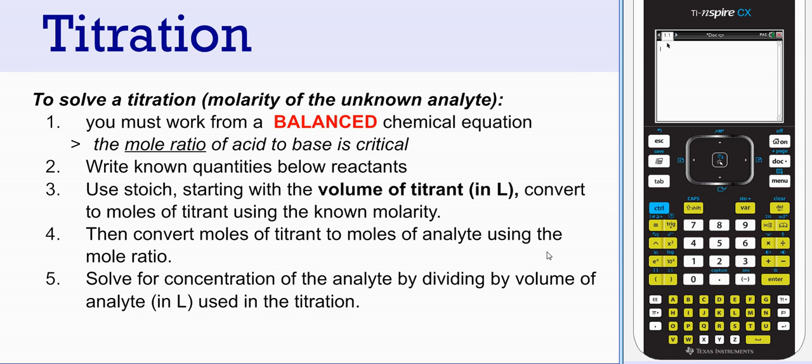Using stoichiometry, we're going to start with the volume of the titrant in liters. And then we're going to convert to moles of the titrant and then to moles of the analyte. And then from there, we can use the volume of the analyte to get a molarity of our unknown analyte. I know that's a lot of fancy words, so let's actually look at it.